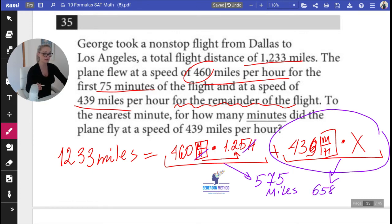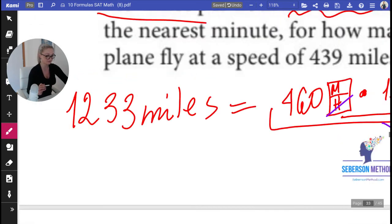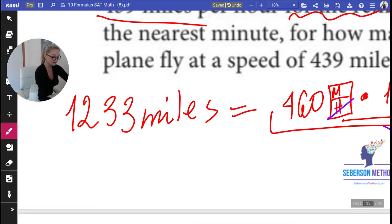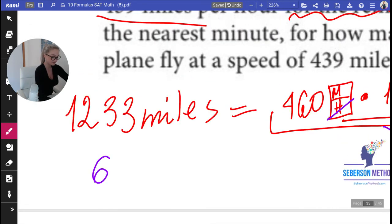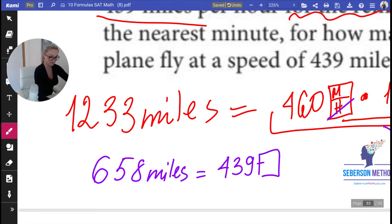Now it turns into a tiny little equation where we have 658 miles equals 439 miles per hour times X. Any ideas how we can find X? I got some. We can divide both sides by 439. Let's divide 658 by 439.